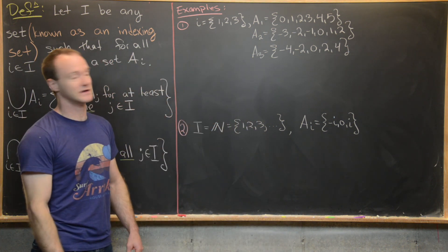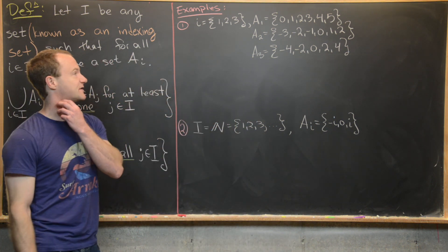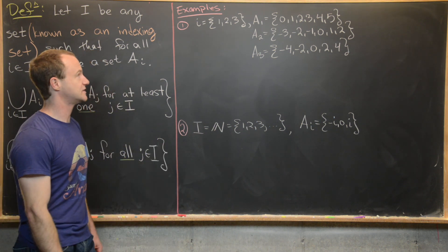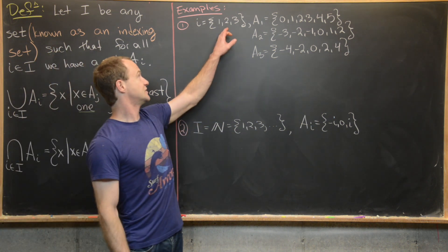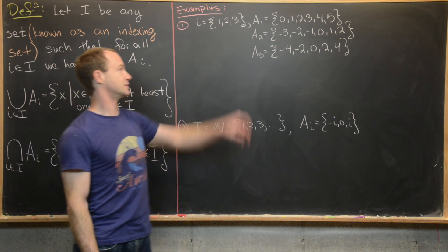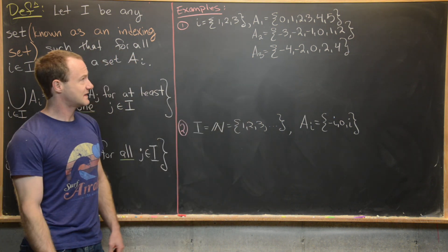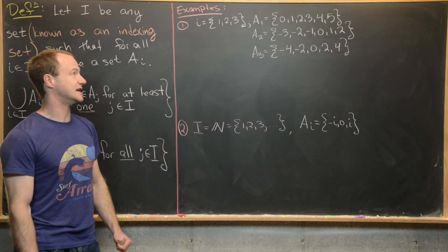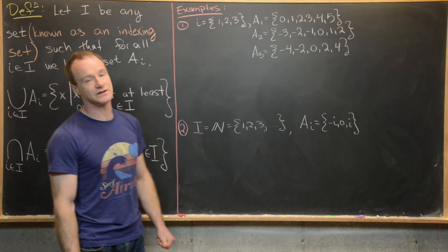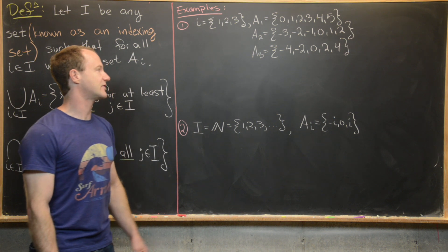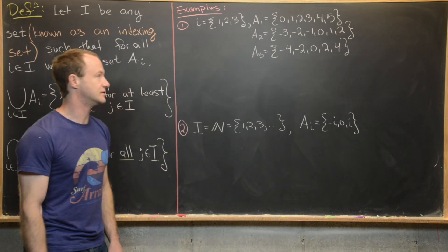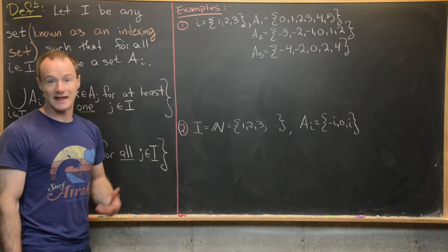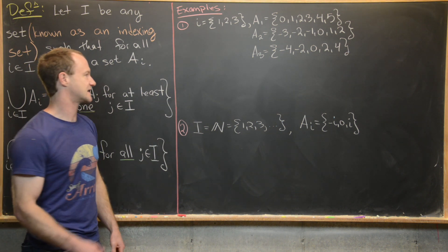Let's do a couple of examples. Starting with this fairly simple one: our indexing set is just a set of three elements, {1, 2, 3}, and for each of these elements we define a set. A_1 is the set {0, 1, 2, 3, 4, 5}, A_2 is {-3, -2, -1, 0, 1, 2}, and A_3 is {-4, -2, 0, 2, 4}. Let's calculate the intersection and the union over these indexed sets.